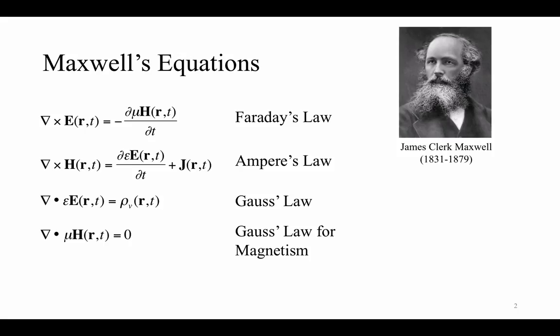All macroscopic electromagnetic phenomena are described by Maxwell's equations, as you can see on this first slide. There are four of them — two curl equations, Faraday's law and Ampere's law, and then two divergence equations, the two Gauss's laws: Gauss's law and Gauss's law for magnetism. Simply by looking at these equations, these are a set of coupled partial differential equations that involve vectors. This boldface E is the electric field, and this boldface H is the magnetic field, and the boldface notation in this course denotes a vector quantity.